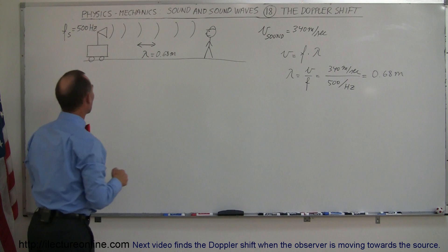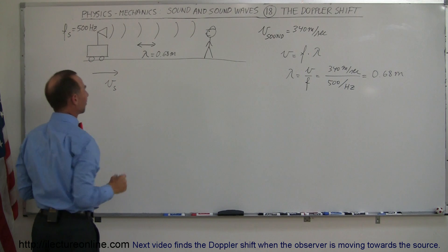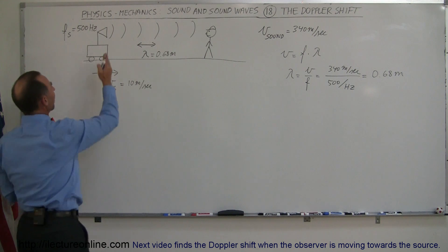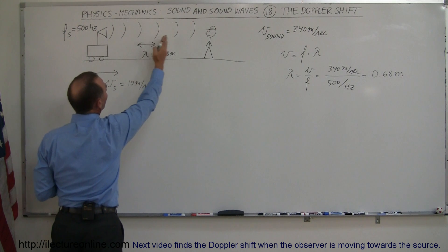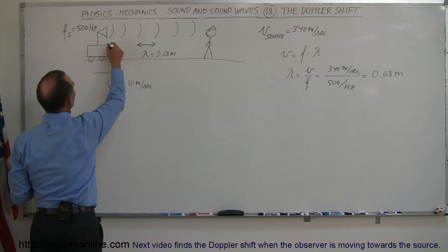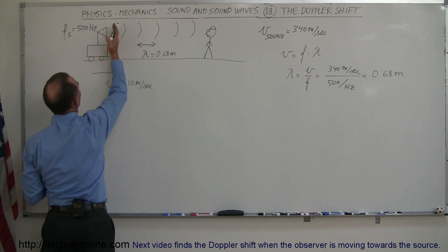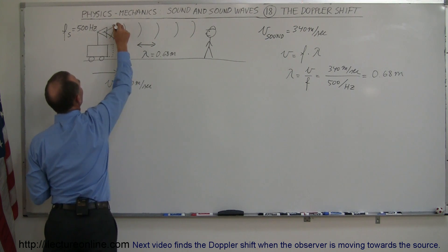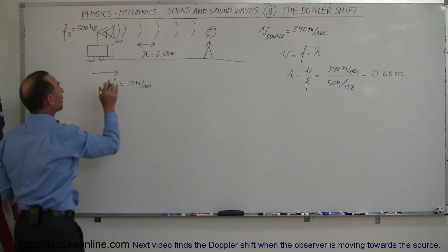Now what happens if the source is moving towards the observer at some velocity v sub s — let's say 10 m/s? Each time sound is produced and a wave leaves the source, it moves out at 340 m/s. But when the next wave is put out, the source has moved closer to the observer, so the sound waves are now closer together, and the wavelength is actually reduced in size.